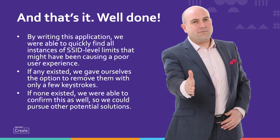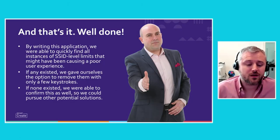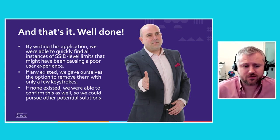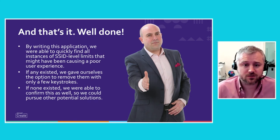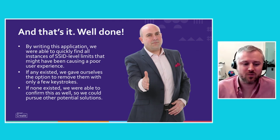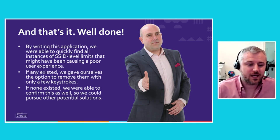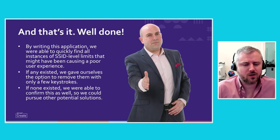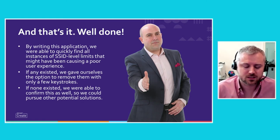Technically, you're done. That was all it takes to build a script that does something very useful for this kind of problem. You saw how it could iterate through organizations, networks, and SSIDs. By writing the application, we were able to quickly find all instances of SSID-level limits that might have been causing a poor user experience, and if any existed, we gave ourselves the option to remove them in just a few keystrokes. The confirmation dialogues we wrote are simply for a better user experience — you don't have to confirm if you don't want to, but if you're running this in a production environment, it's not a bad idea. And if none of the bandwidth limits existed, we were able to confirm that and focus elsewhere on a different solution.